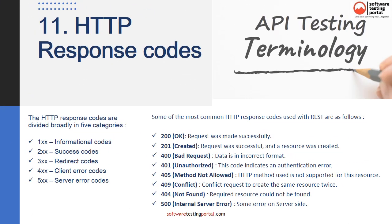There are standard HTTP response codes including informational codes, success codes, redirect codes, client error codes, and server error codes. Some of the most common HTTP response codes used with REST are: 200 OK, 201 Created, 400 Bad Request, 401 Unauthorized, 405 Method Not Allowed, 409 Conflict, and 500 Internal Server Error.